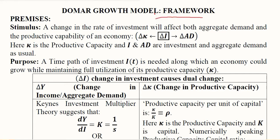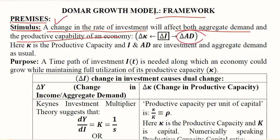Let us talk about the framework. For every framework we have to set some premises on which the whole model is founded. We are talking about investment, which is actually a stimulus. If there is a change in the rate of investment, it should affect aggregate demand as well as the productive capacity of the economy. This is the demand side that gets affected by any stimulus of investment — that is, an increase or decrease in investment — though we are talking about the favorable change, which is an increase in investment.